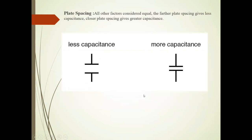Now the second factor is plate spacing. If all other factors are considered equal, then farther plate spacing gives less capacitance, and closer plate spacing gives greater capacitance.